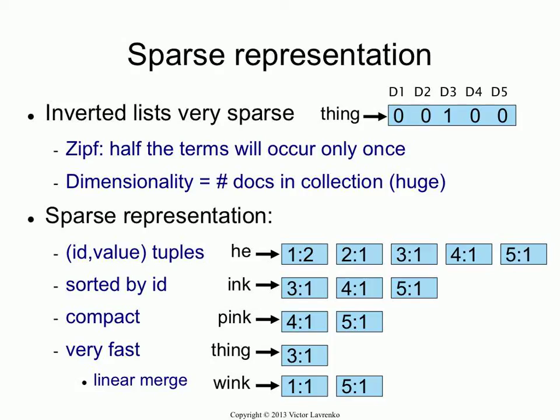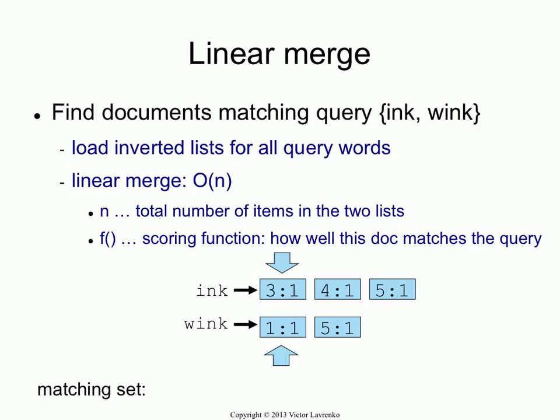You get a very compact representation of the data and a very fast way to access it. One thing to notice: if you look at all of these lists, they're all sorted. The document IDs are increasing in every list. The reason you do it this way is that if you keep your lists sorted, you have a very fast mechanism for extracting matches out of multiple inverted lists — and that's called linear merge, which we'll talk about next.